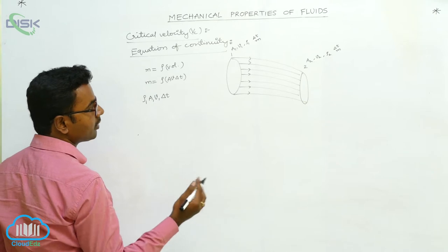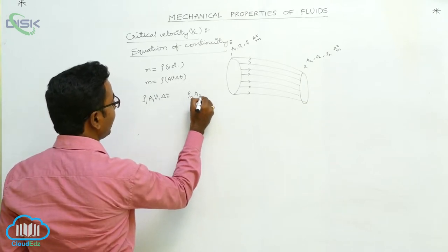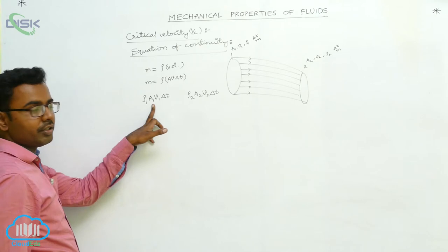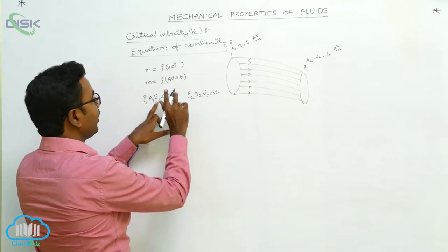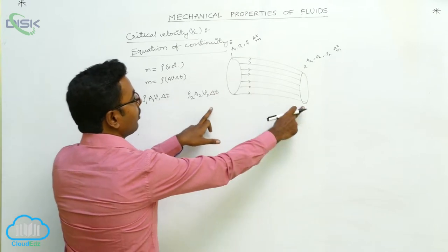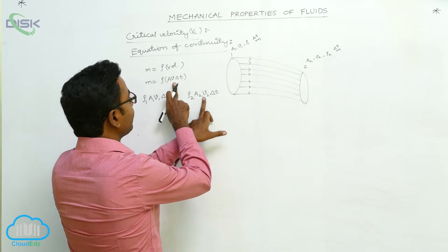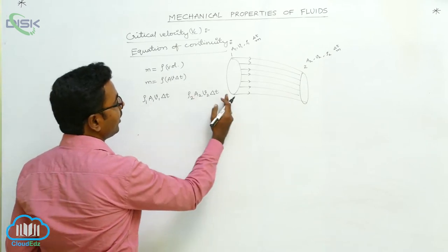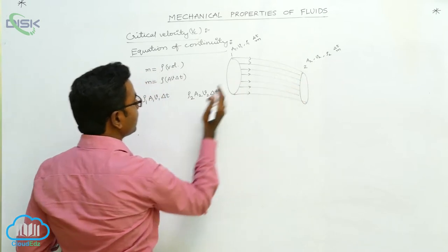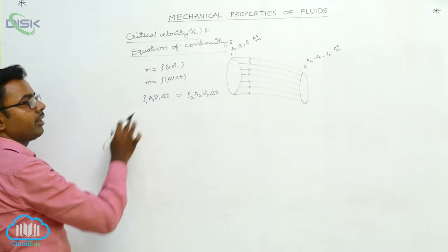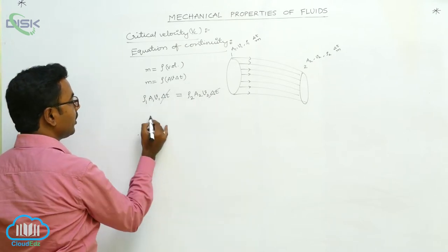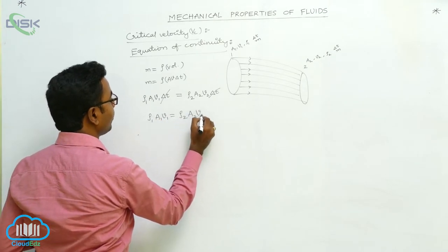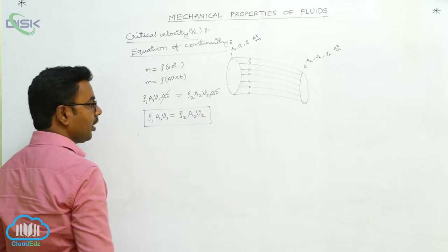The mass that entered at cross-section 1 is Rho 1 times A1 times V1 times delta t. The mass that left at cross-section 2 is Rho 2 times A2 times V2 times delta t. According to the law of conservation of mass, these are equal: Rho 1 A1 V1 delta t equals Rho 2 A2 V2 delta t. Cancelling delta t, we get Rho 1 A1 V1 equals Rho 2 A2 V2. This is the equation of continuity for compressible fluids.